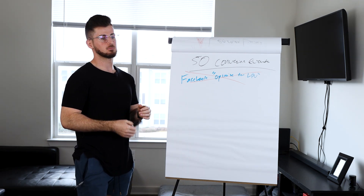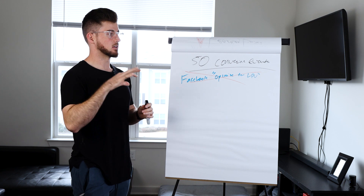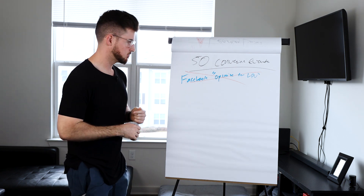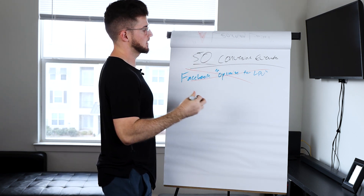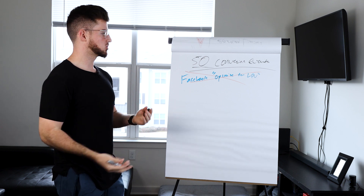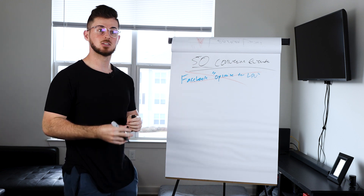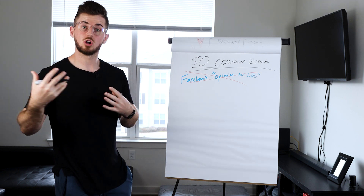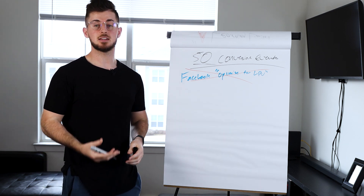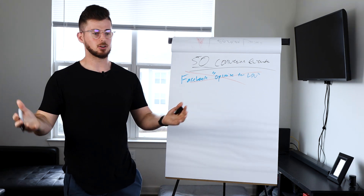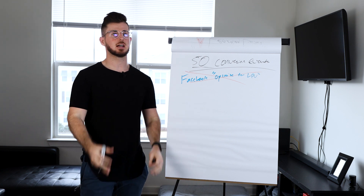I've still been able to scale ad accounts while in learning limited, so it's something I don't take too seriously — but I do have preventive measures. Number one: focus on getting 50 conversion events. Focus on ad copy, creative, and offer. If you have really good performing ads you'll get a lower cost per purchase, which increases the number of conversion events for your ad set.